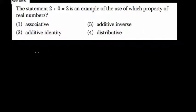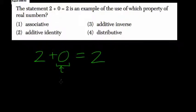Okay, so here they tell us the statement 2 plus 0 is an example of which property? Well, here 0 is the additive identity.